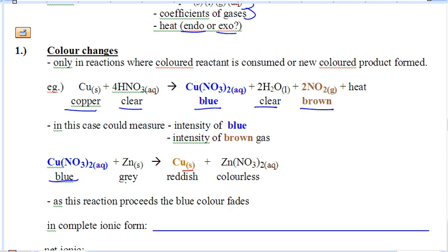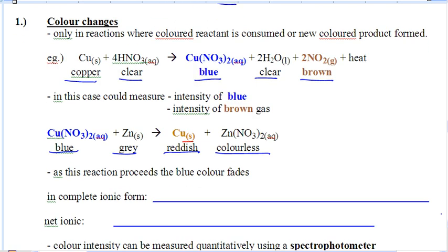In another example, we've got something that's blue and gray turning into red and colorless. Again, the color is given. You can monitor the color. Just expand on these examples a little bit and review some of the things that we did yesterday.